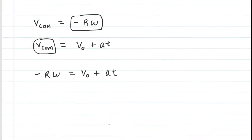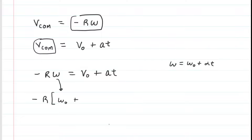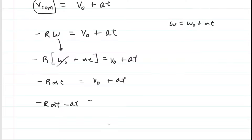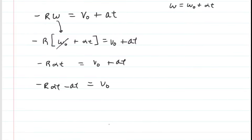Now let's address that final angular velocity, omega. From rotational kinematics, the final angular velocity equals the initial angular velocity plus the angular acceleration multiplied by time. We substitute that expression — initial angular velocity plus alpha times t — in for the final angular velocity. Since the initial angular velocity was zero, that term drops out. Now we have an equation we can solve for time t: on the left side, negative r times alpha times t, and on the right, the initial velocity plus a times t. Subtracting a times t from both sides,